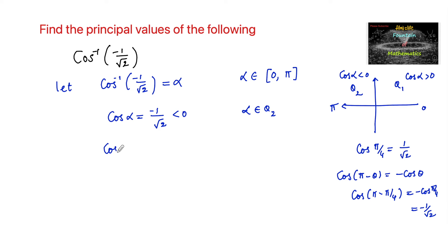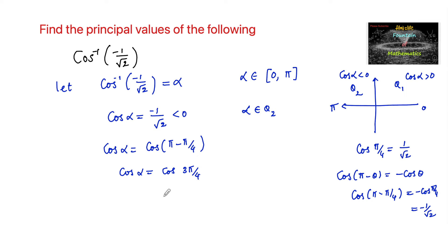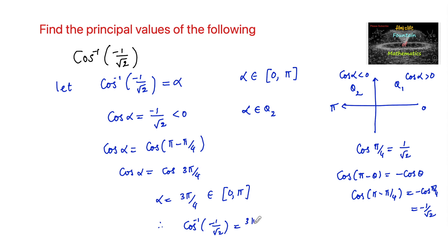Therefore we can write cos alpha is equal to cos(π − π/4), that is cos alpha is equal to cos(3π/4). Therefore alpha is equal to 3π/4, which belongs to the principal range 0 to pi. Therefore the principal value of cos inverse of minus 1 by root 2 is equal to 3π/4.